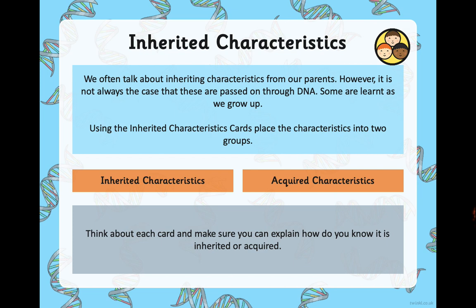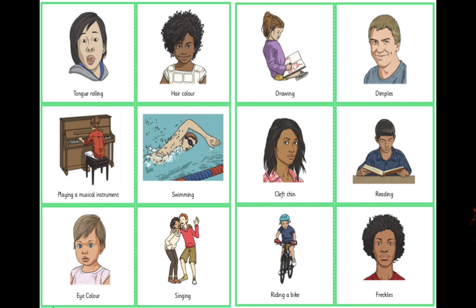We often talk about inheriting characteristics or traits from our parents. However, it's not always the case that these are passed on through DNA — some are learned as we grow up. There's a nature-nurture balance: some things you inherit and are born with, and other things you develop as a result of growing up in a certain environment — acquired characteristics. For example, I grew up in a house where my mum really loves music and plays the piano. I also really love music, but that is not an inherited characteristic in my DNA — it's part of the experiences I had. Things you gain as a result of your experience are acquired. On the next slide there are some cards with different characteristics — think about whether they are inherited or acquired. Hit pause and think carefully about each one.